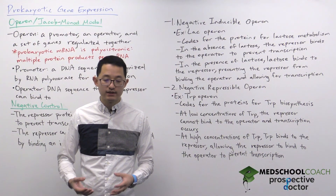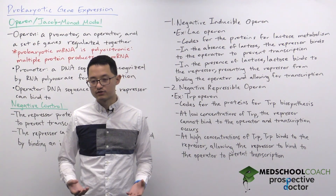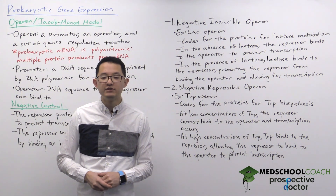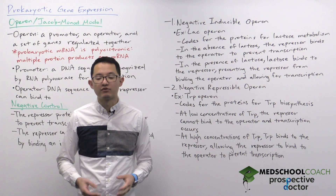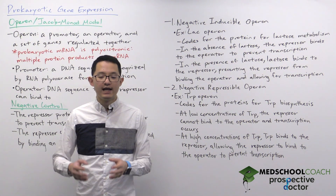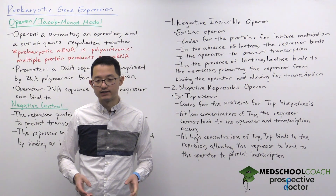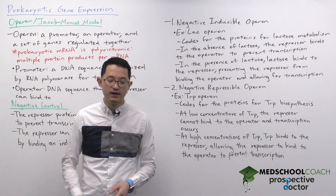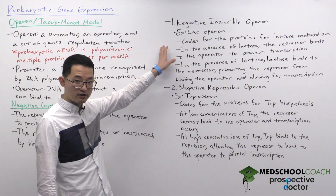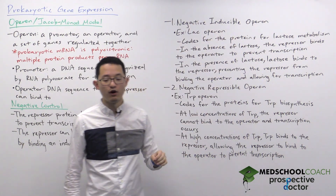If you think about it, this is very logical: if no lactose is present, the prokaryote should not be making the proteins and enzymes for lactose metabolism. In the presence of lactose, the cell should be making those proteins and enzymes. That's the lac operon — an example of a negative inducible operon.